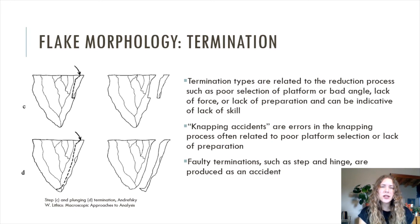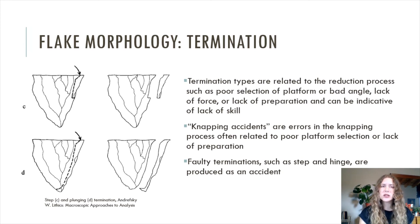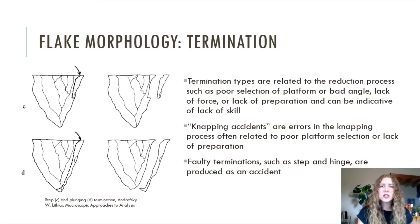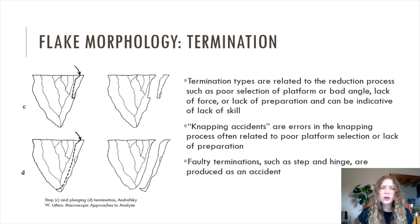In flintknapping and lithic analysis as a whole, termination is a concept really important to interpreting flakes. Termination is basically the way in which the flake detaches from the objective piece. Termination types are related to the reduction process — such as poor selection of platform or bad angle, lack of force, or lack of preparation — and can sometimes be indicative of lack of skill on the napper's part. Sometimes they're just plain accidents. They're often referred to as napping accidents, which are errors in the napping process often related to poor platform selection or lack of preparation. Faulty terminations such as step and hinge are examples of napping accidents.